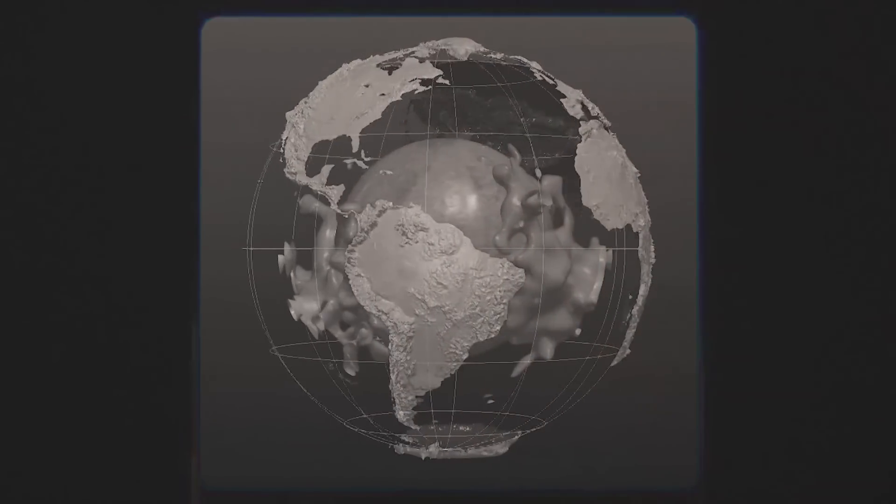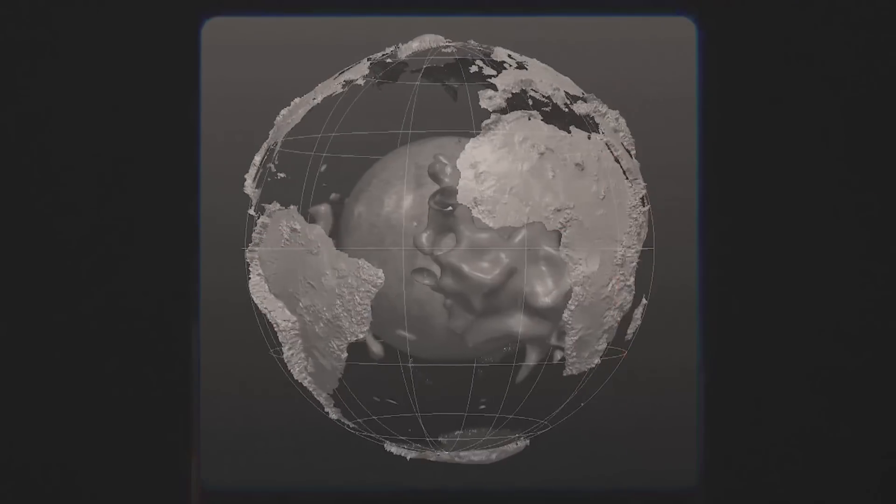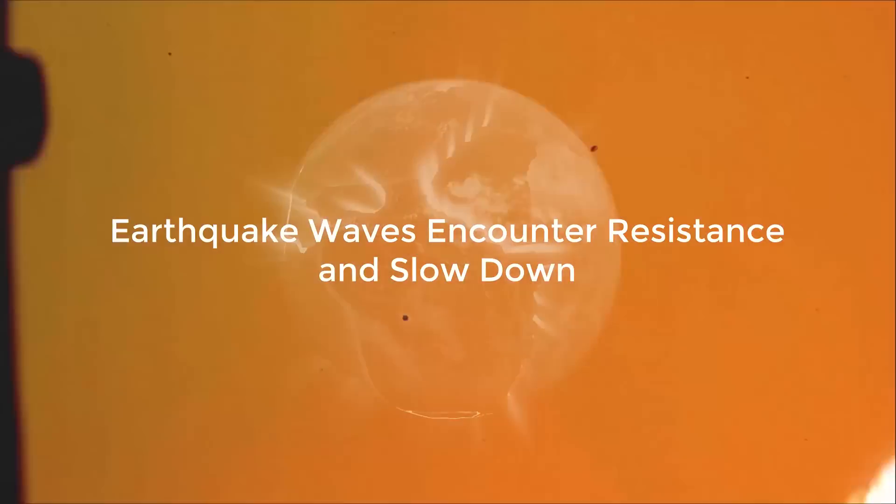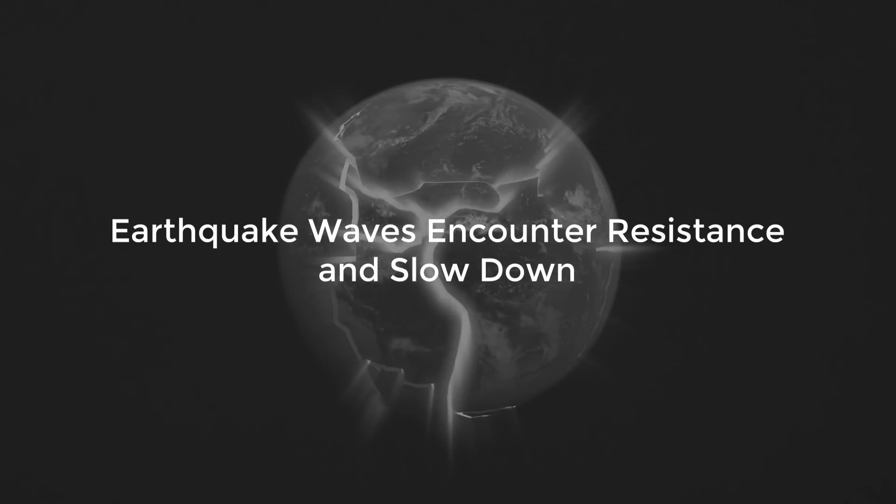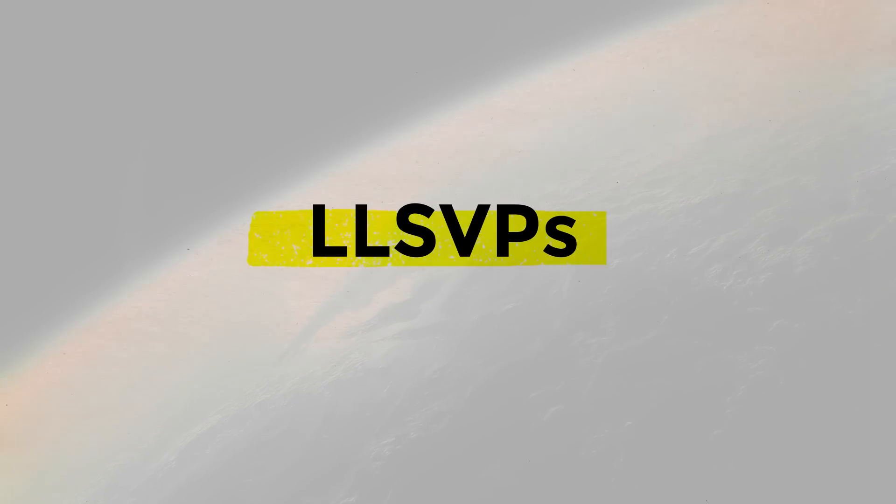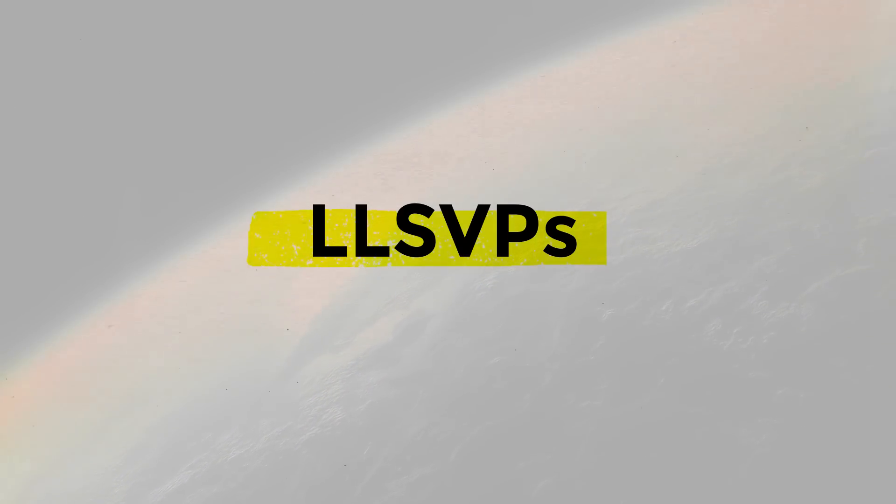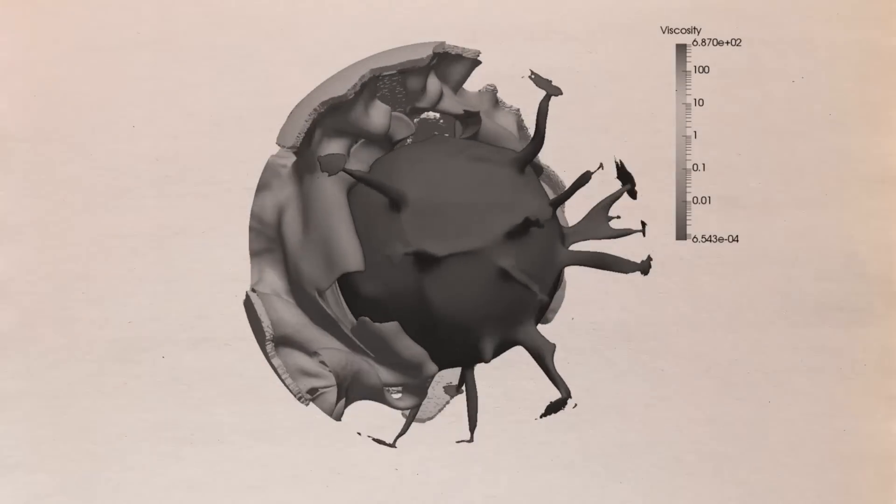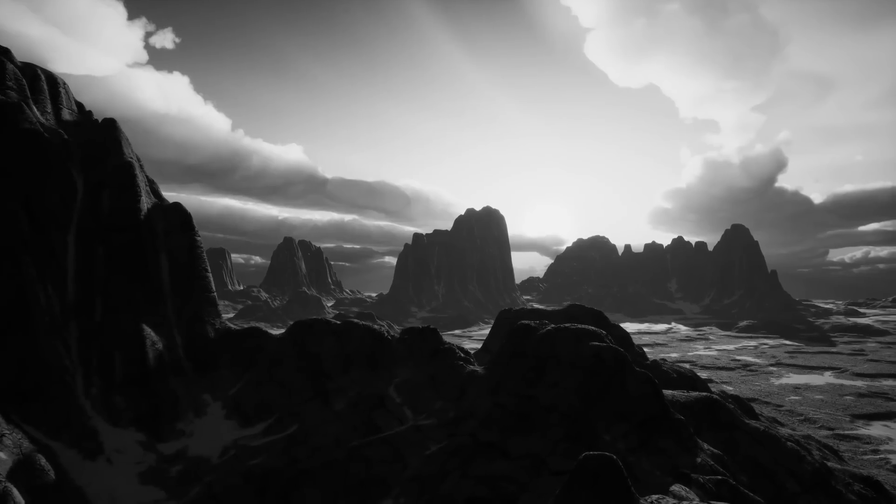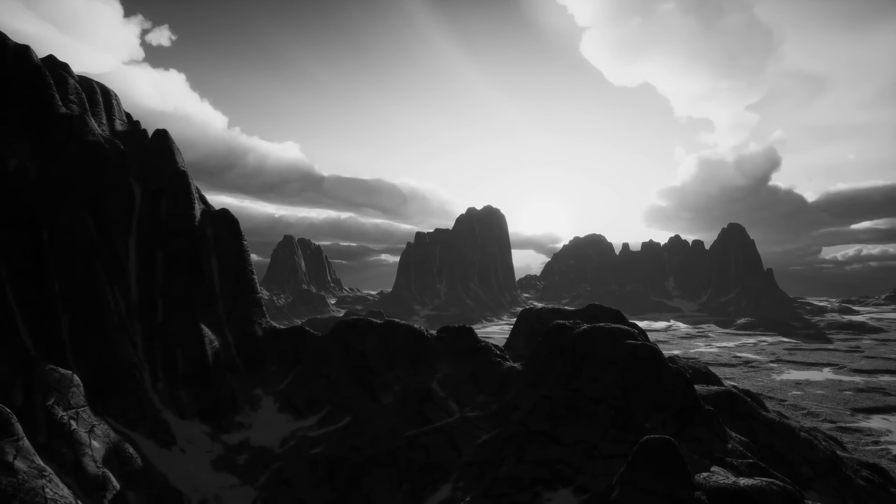Geologists discovered two enormous regions inside the mantle, one spanning Africa and the other beneath the Pacific Ocean, where earthquake waves encounter resistance and slow down. These are referred to as LLSVPs, or Large Low Shear Velocity Provinces. They could be described as extraordinarily bulbous mountains, but it's difficult to find an analogue for their unique shapes. Because of the controversy surrounding their appearance, they have been given the moniker blobs.